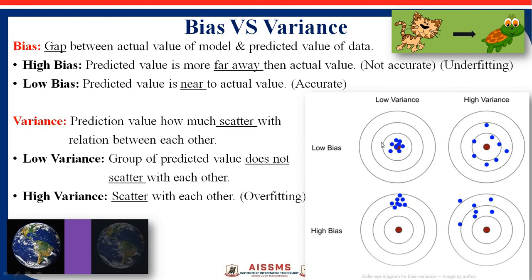In the first diagram, there is low bias and low variance — this is the accurate condition. The brown color dots are the actual points and the blue color dots are the predicted values. Predicted values are near to actual values, and all the blue dots are grouped together, so this is accurate data. The next case is low bias and high variance: the predicted value is near to the actual value, but all the blue points are scattered with each other.